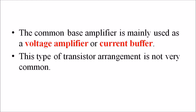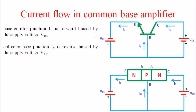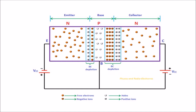When it comes to the current flow in a common base amplifier, for the sake of understanding, let us consider the NPN transistor in common base configuration. The NPN transistor is formed when a single P-type semiconductor layer is sandwiched between two N-type semiconductor layers. The base-emitter junction JE is forward biased by the supply voltage VBE, while the collector-base junction JC is reverse biased by the supply voltage VCB. Due to the forward biased voltage VBE, the free electrons — the majority carriers in the emitter region — experience a repulsive force from the negative terminal of the battery. Similarly, the holes, i.e., the minority carriers in the base region, experience a repulsive force from the positive terminal of the battery. As a result, these free electrons start flowing from the emitter to base; similarly, holes start flowing from base to emitter.